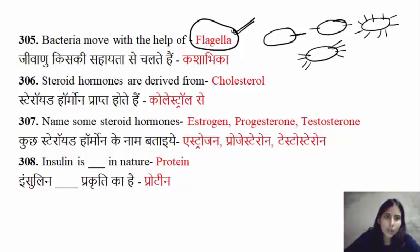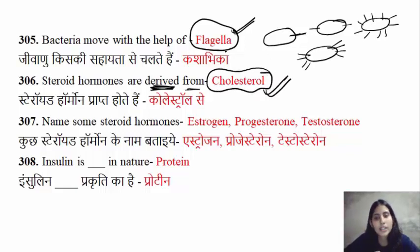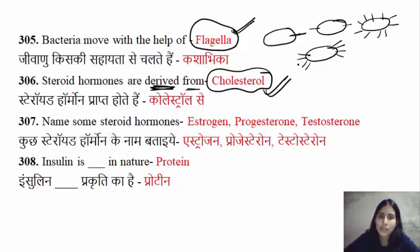Where are steroid hormones derived from? They are derived from cholesterol. Steroid hormones which you can form in your body from cholesterol include estrogen, progesterone, and testosterone. These are all of your steroid hormones.